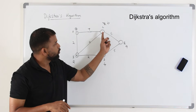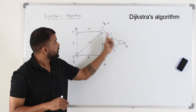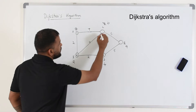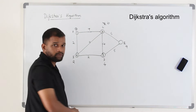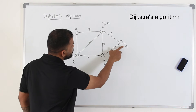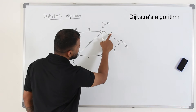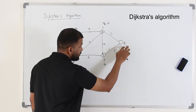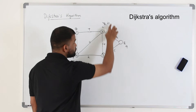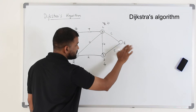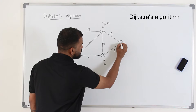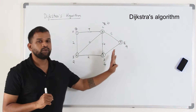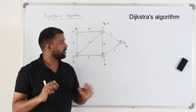Now you have two vertices, C and E. C has the smallest working value, so label it as number 4. From C to D, 6 plus 5 is 11, but E already has a working value of 9, which is smaller than 11, so leave it as is. That's how you complete Dijkstra's algorithm.